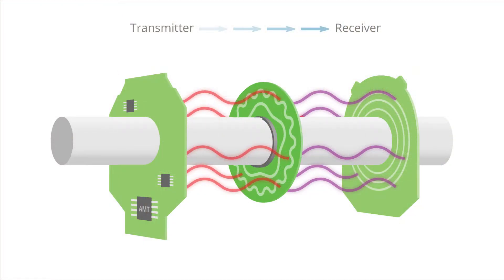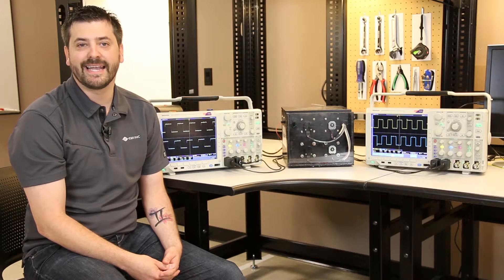An AMT encoder, being capacitive-based, is not susceptible to airborne contaminants or any oil that's in the system, making it ideal for a lot of motion control applications.